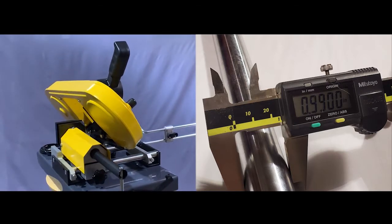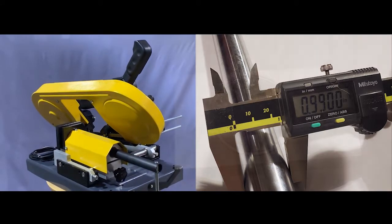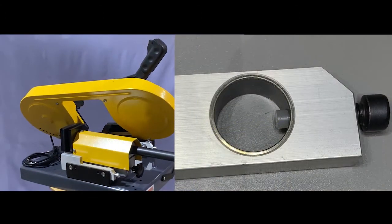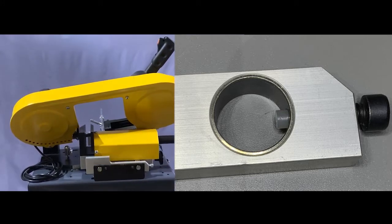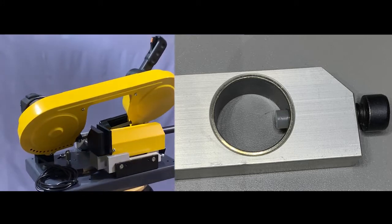The vise and the left and right work supports ride the rails on Teflon coated bushings and are secured in position with nylon tipped screws to prevent damage to the precision ground rails.